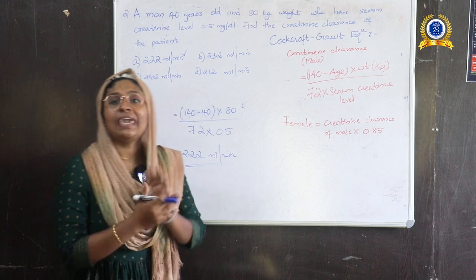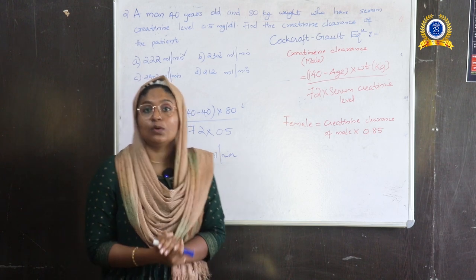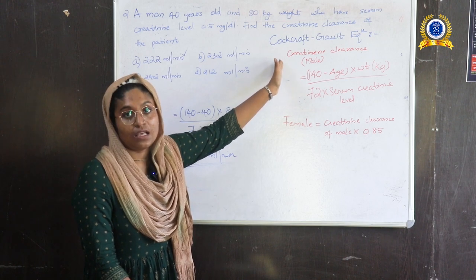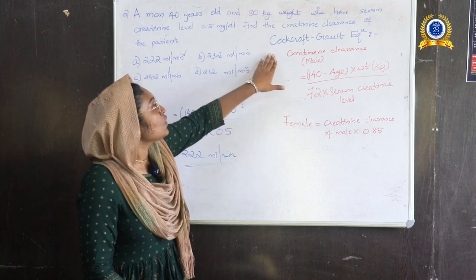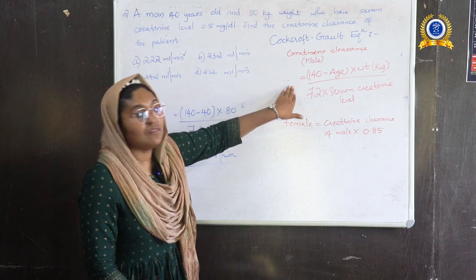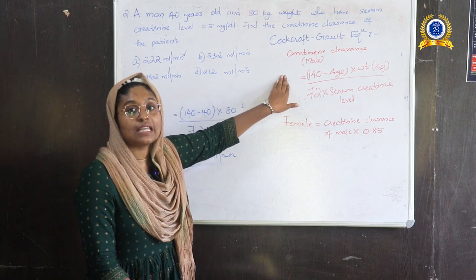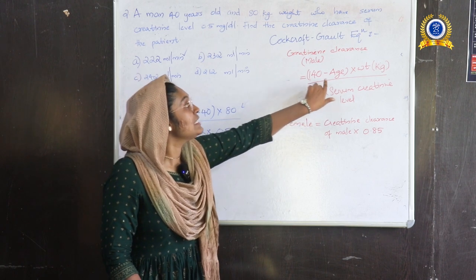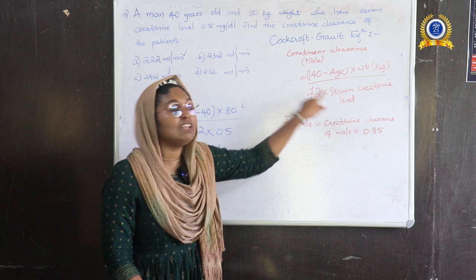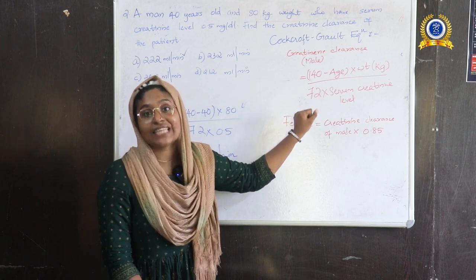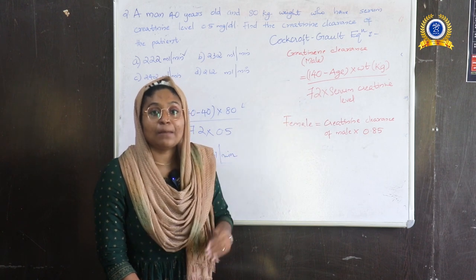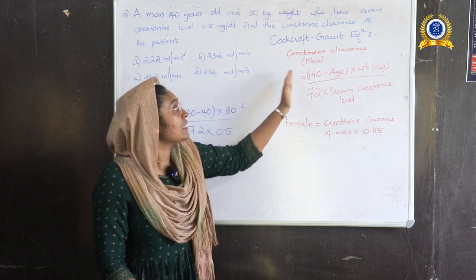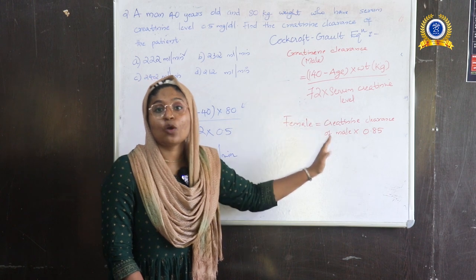The key thing to memorize is the Cockcroft-Gault equation to find creatinine clearance of the kidney. For males: (140 − age) × weight in kg ÷ (72 × serum creatinine level). For female creatinine clearance, take the male value and multiply by 0.85.